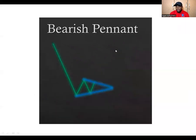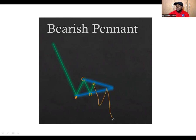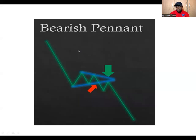Now the bearish pennant works the same way. The next lower low is not lower than the previous one, and the next higher high is not as high as the previous one — they converge. Once there's a breakout and a possible retest, you continue in the bearish direction. Your entry is after the retest, your stop loss is at the top — the first higher high — and two or three times that becomes your take profit.